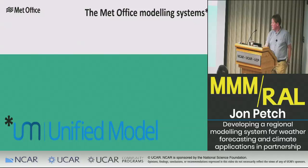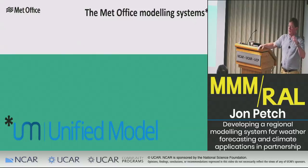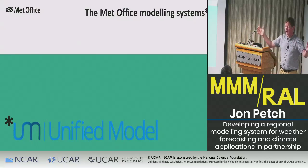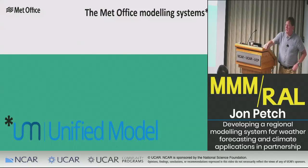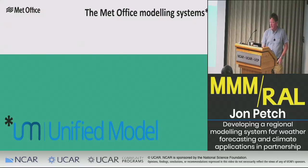Our model is called the Unified Model in the sense that we use it for both weather and climate - it's the same code. There are pragmatic decisions around how you set it up, but we try to keep it deliberately as similar as appropriate for all the different things we do: regional, global, weather, climate. The key concept is traceability - we can describe the differences between any of the systems that have been used, as they've all started from the same point.